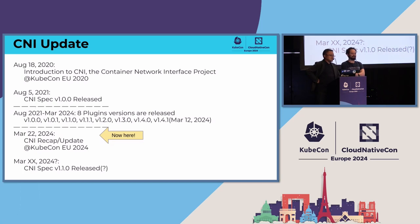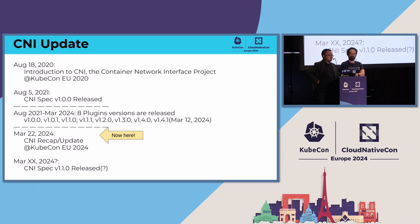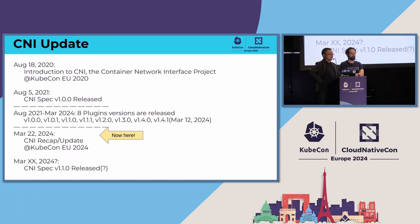When I look at KubeCon North America and EU, the last CNI update seems to be August 2020 at the KubeCon EU introduction to CNI. This means there may be roughly four years passed. What's happened roughly? The first CNI spec version 1 was released in August 2021. After that, eight plugin versions were released — eight CNI plugins in the CNCF CNI project from version 1.0 to version 1.4.1. The last one was just released last week. Now we are March 22nd, 2024, and CNI spec 1.1.0 will be released soon.